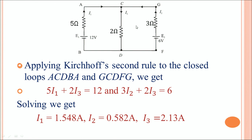For the second loop G→C→D→F→G, going anticlockwise: current I3 through 2 ohms and I2 through 3 ohms are both in the same direction as the loop. Battery E2 is traversed from negative to positive, so it is positive. The equation is: 3I2 plus 2I3 equals 6. You now have three equations in terms of I1, I2, and I3. Solving these simultaneously gives you the values of I1, I2, and I3.